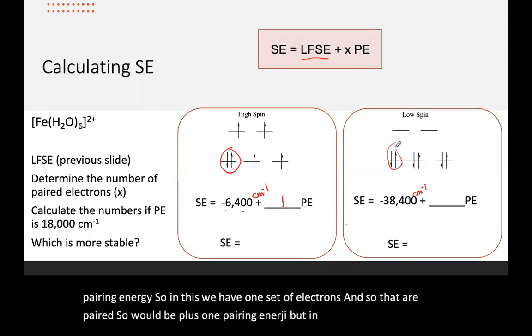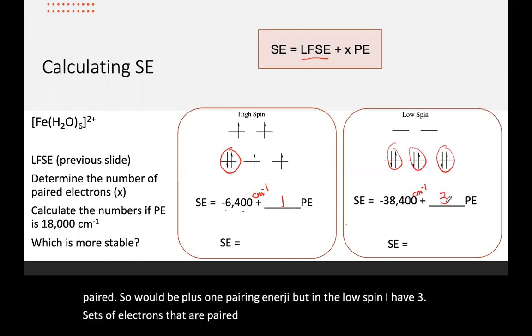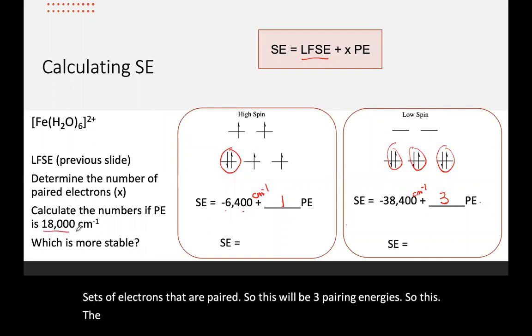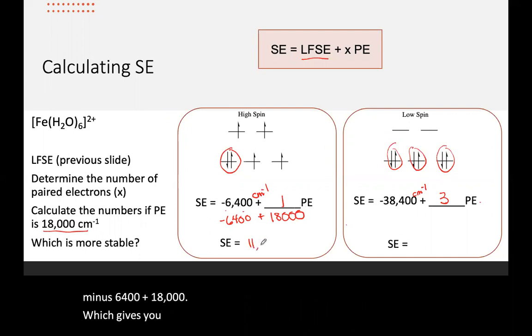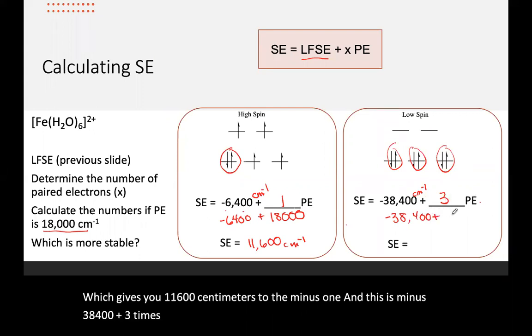But in the low spin, I have three sets of electrons that are paired, so this will be three pairing energies. The pairing energy has been calculated here as 18,000. So this will be minus 6,400 plus 18,000, which gives you 11,600 centimeters to the minus one. And this is minus 38,400 plus three times 18,000, so plus 54,600.